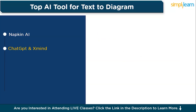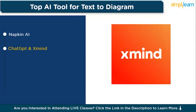Our next tool is ChatGPT with xMind. Combining the power of ChatGPT and xMind gives you a unique and efficient way to transform textual descriptions into detailed visualizations. ChatGPT provides a structured text outline which you can copy into xMind — a powerful mind-mapping tool. xMind supports various visualization formats including mind maps, flowcharts, and organizational charts, allowing you to break down complex ideas into structured, organized diagrams, whether for project planning, brainstorming, or process visualization.